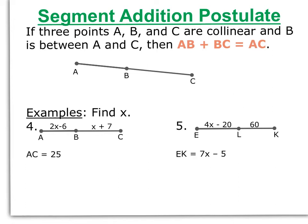The segment addition postulate says if three points A, B, and C are collinear — so remember they're on the same line — and B is between A and C, then AB plus BC equals AC. In other words, we can add the two parts up and it will give us the whole line segment. In number 4, we have line segment AC. We know segment AB is 2x minus 6 and segment BC is x plus 7, and we know the whole line segment AC is 25. So using the postulate, I can set up an equation: 2x minus 6 plus x plus 7 equals 25, because AB plus BC equals AC.